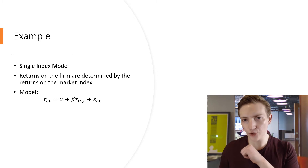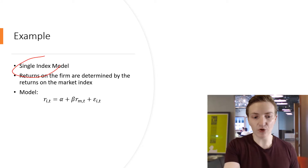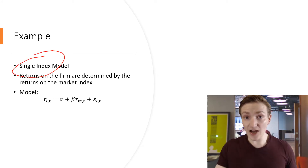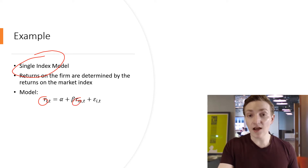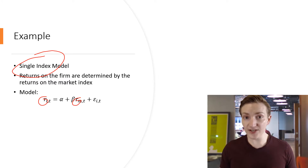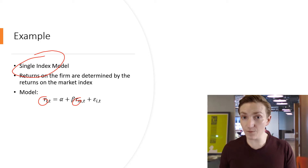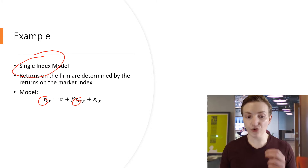So that we can start looking at this in Excel, let's think of a basic example — the single index model. The single index model posits that our returns on a stock are going to be a function of the returns on the market index, i.e. there's a single factor that determines stock returns on average, hence the name single index model. The output from the single index model gives us an alpha for the stock representing the extent to which it has outperformed or underperformed the market index, residuals representing the random movements of that stock on any given day, and the beta representing the sensitivity and responsiveness of the stock's returns to the returns on the market.